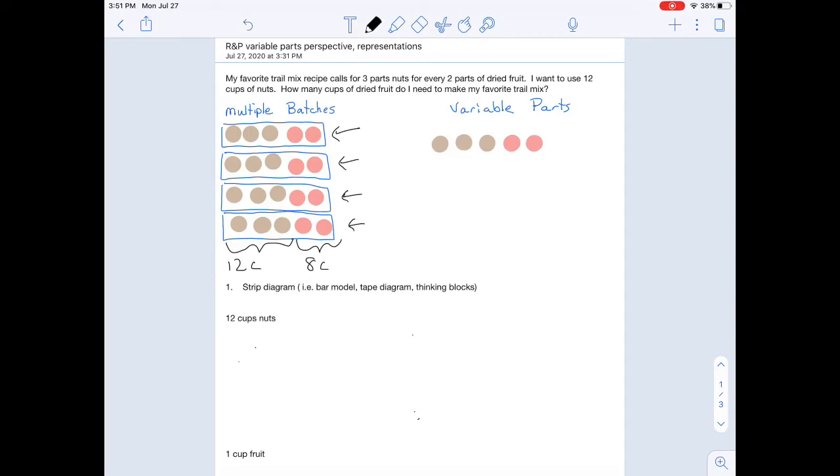The variable parts takes a different approach. So we start with the same three to two ratio, but instead of repeating batch after batch, we're going to say let's change the value of each part. So if I know my three parts of nuts corresponds to 12 cups of nuts, well I can use division. 12 cups divided by three parts means that each of the parts has to be worth four cups. So once I know the value of one part, I'm going to extend that to the value of all parts. So each of my parts is worth four cups, which means that I'm going to need a total of eight cups of dried fruit.